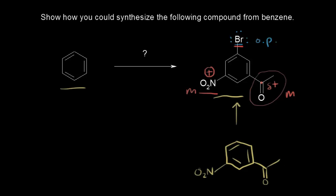Next, we just have to remember how to put a bromine on a benzene ring. That's a bromination reaction, so you would need some bromine and a catalyst — something like FeBr3 will work for that.